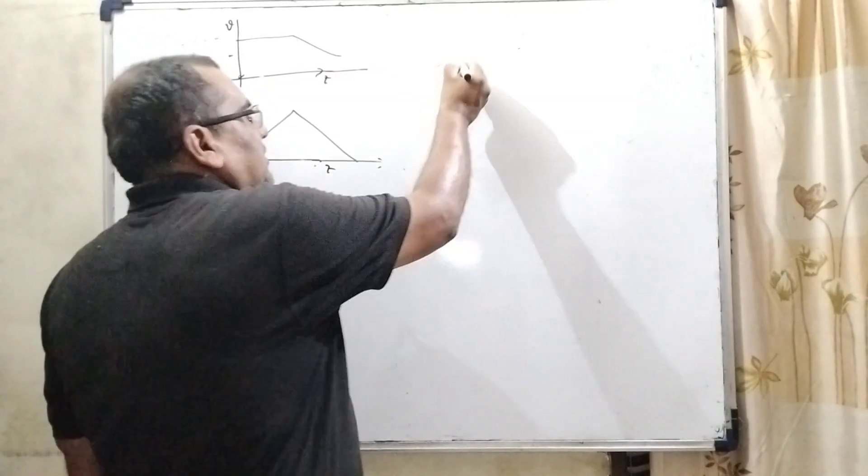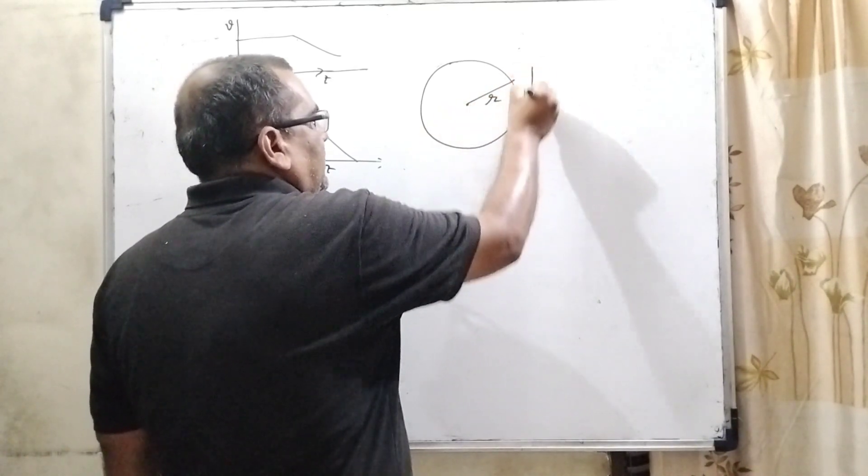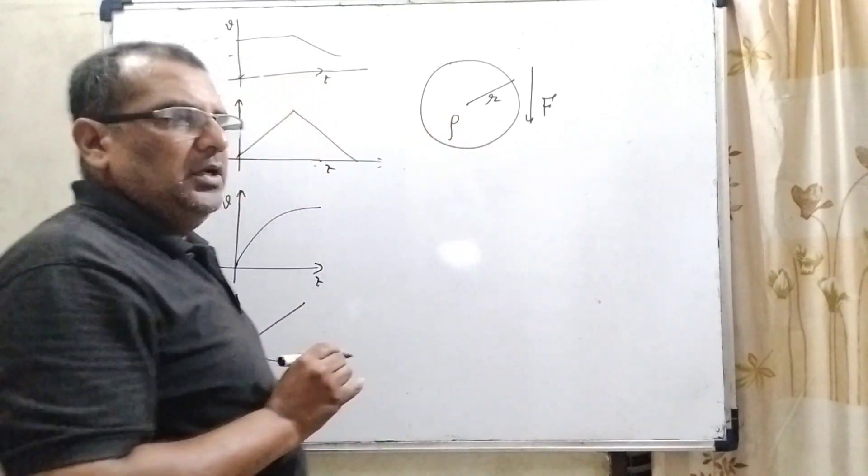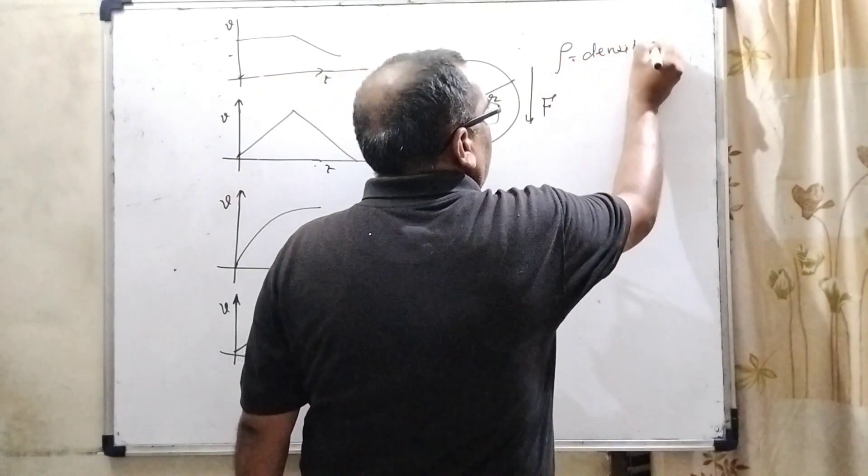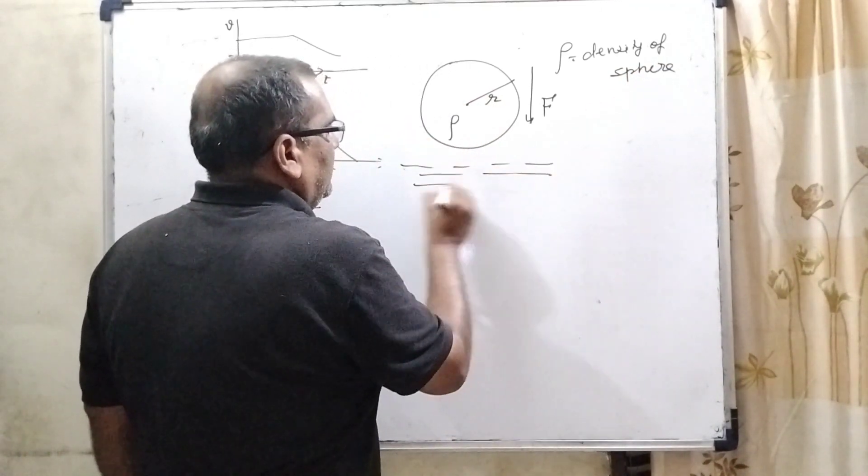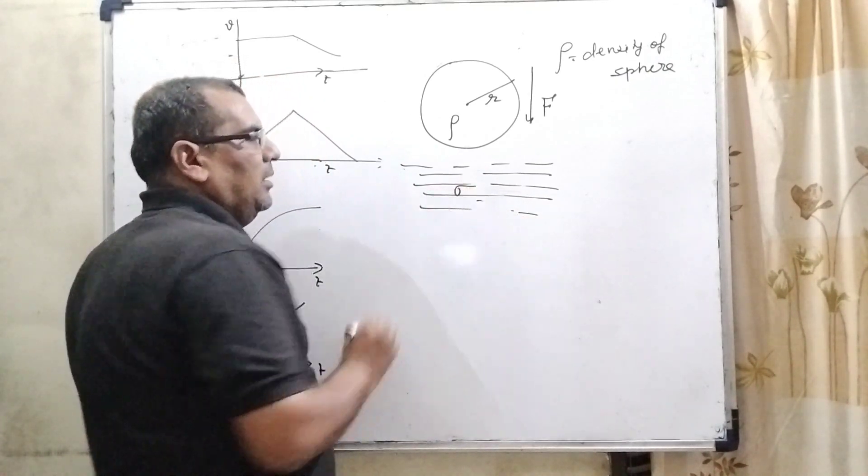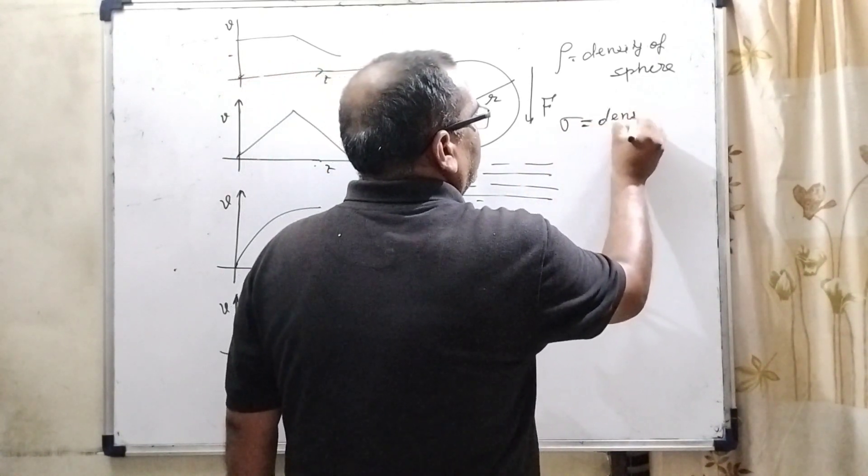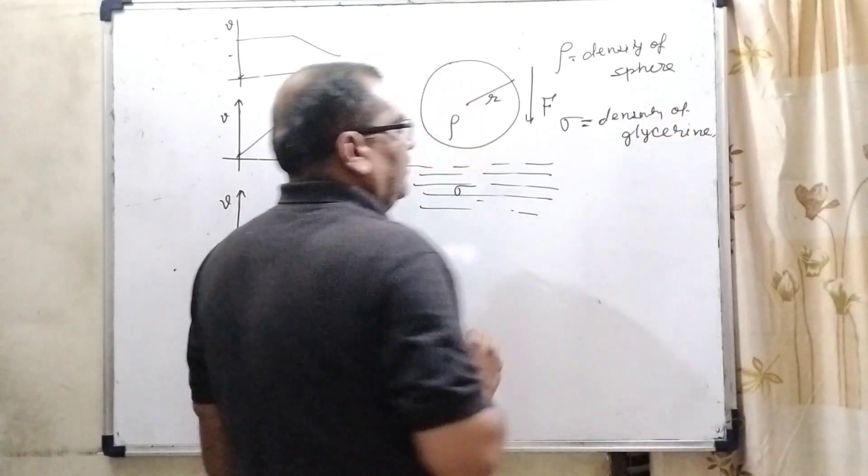Now, let us consider this is metallic ball which having the radius is R and it is falling down with the force F and its density is considered rho. Here what is rho? Rho is the density of sphere. And which is falling down in glycerin, let us suppose its density is sigma. So, sigma is the density of glycerin.